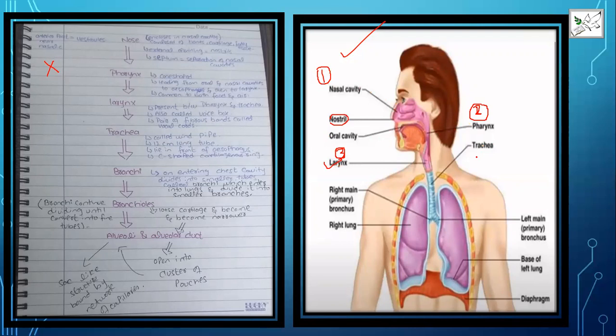The next part is the larynx, which is a voice box. It is present between the pharynx and trachea. We call it the voice box because your sound is produced here. It contains a fibrous band called the vocal cords, which help in sound production. From the larynx, air further moves towards the trachea.